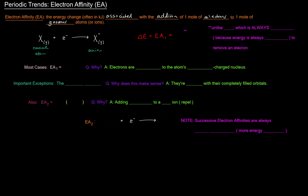The electron affinity can actually be negative or positive. It's the energy associated with the addition of one mole of electrons — it's not necessarily required. A positive value would mean energy is required, but a negative value indicates that energy was released. This is unlike ionization energy, which is always positive, because energy is always required to remove an electron.